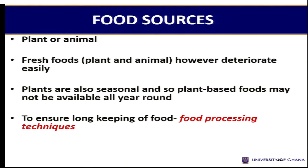What are the sources of food that we have as human beings? We get food from both plant and animal sources — these are the two major sources. And we have some in the form of fresh foods. However, because they deteriorate very fast — for example, when we have our vegetables, our tomatoes, okra, even meats — if we don't store them, they will spoil. So we need to preserve them, and that is where food science and food processing comes in.